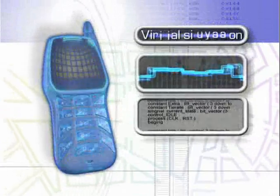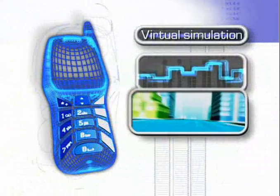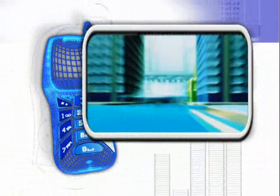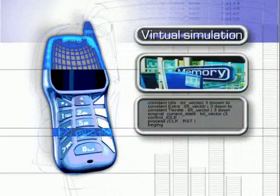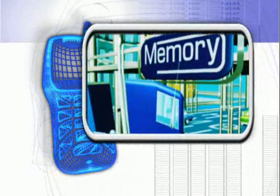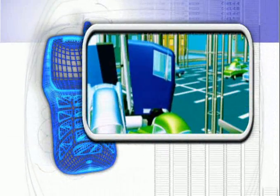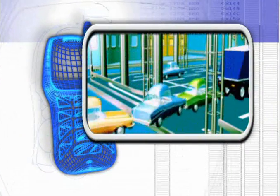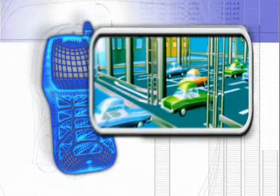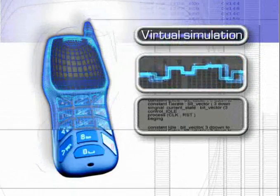Quickly model your system architecture and functionality. Run high performance simulation. Apply trade-offs and define the necessary design partitioning. Then, bring those decisions down to the correct level of design abstraction.